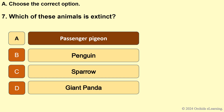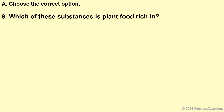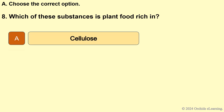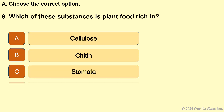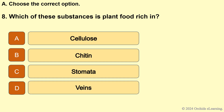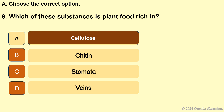Answer: A — passenger pigeon. Which of these substances is plant food rich in? Answer: A — cellulose.